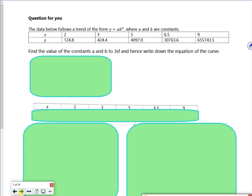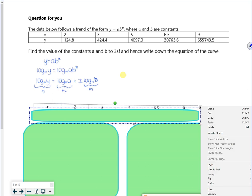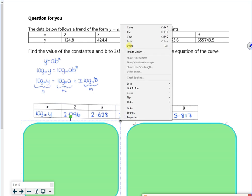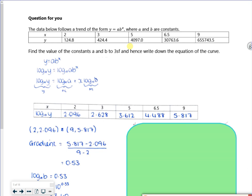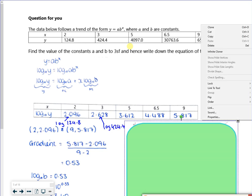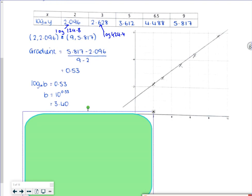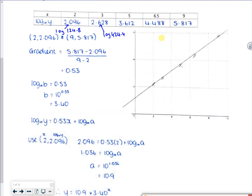So there's a question for you, following exactly the same procedure. So please have a go at this and make sure you get the same value. So remember, that 2.096 is actually log of whatever the y value is, 124.8. And that's log of the y value.